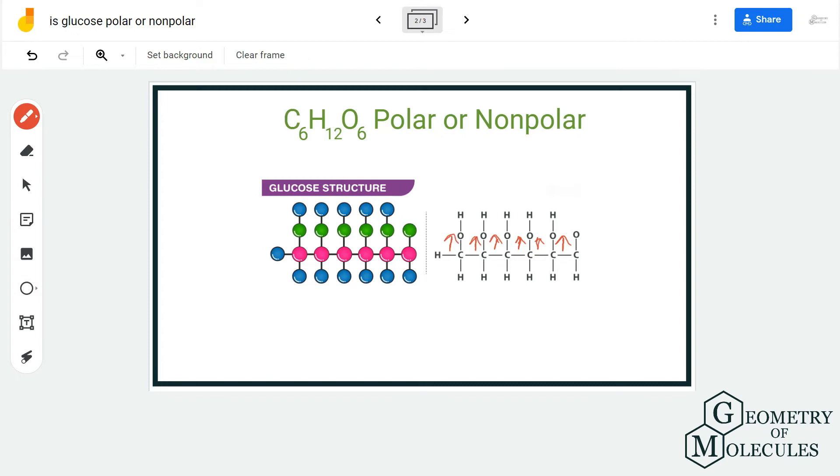There will be a net dipole moment which creates poles in this molecule. The areas which have oxygen atoms will have partial negative charges, and the other regions will have partial positive charges. Hence, as there are poles formed in this molecule, it is a polar molecule.